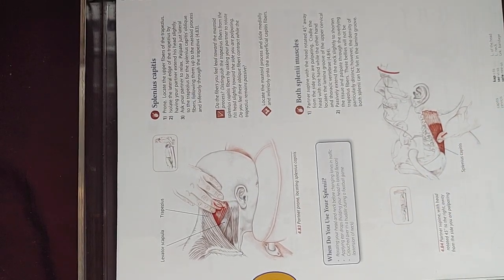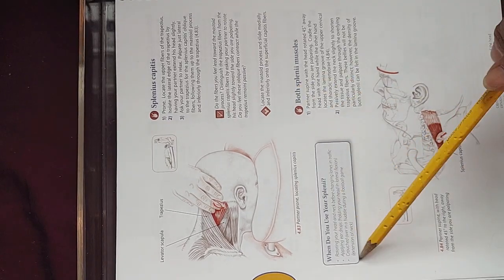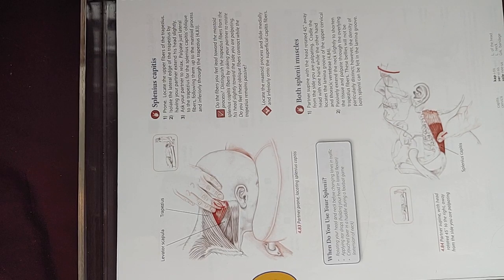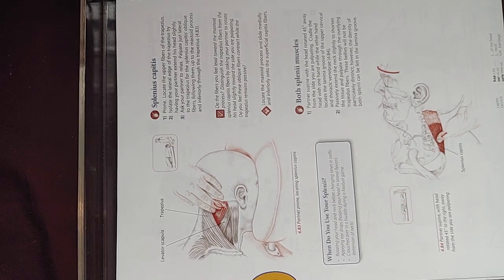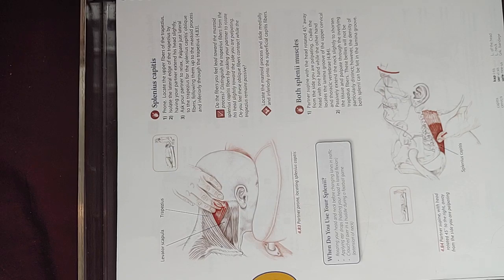So when do you use your splenius capitis or splenius cervicis? When you're rotating your head and neck before changing lanes in traffic, applying ear drops, holding your head in lateral flexion, crouching over in a huddle during a football game, or doing extension of the neck.